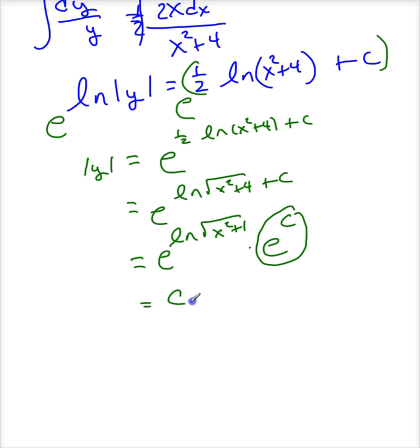So, this becomes c1 times... Now, e to the log of the square root of x squared plus 1 is just the square root of x squared plus 1. And this is the absolute value of y.